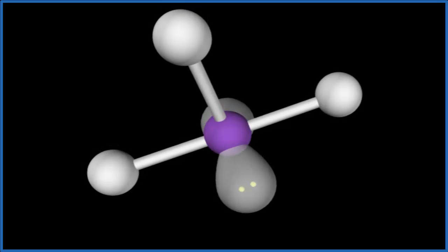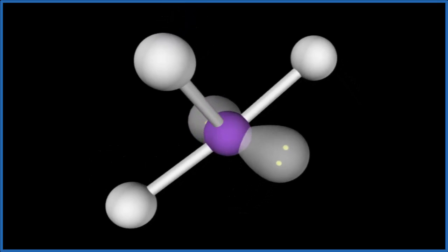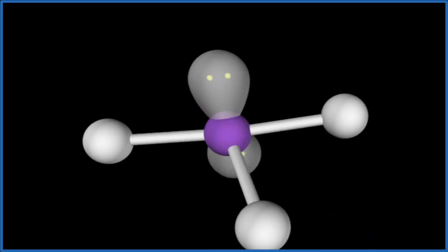So the molecular geometry for ICL3 is T-shaped. Let's go back to our Lewis structure and look at that.